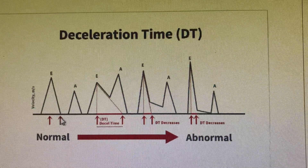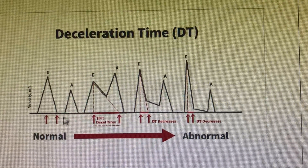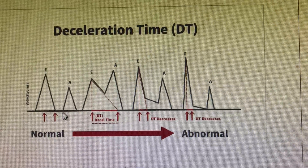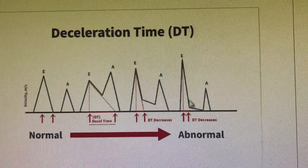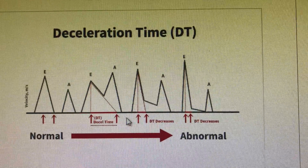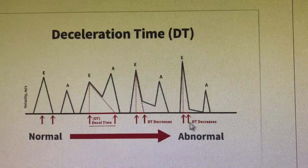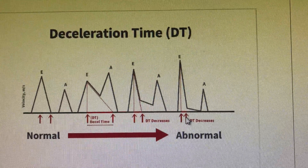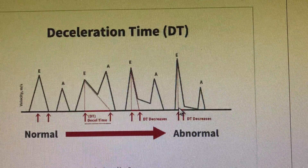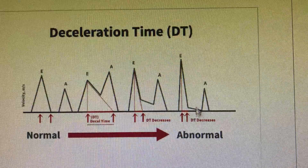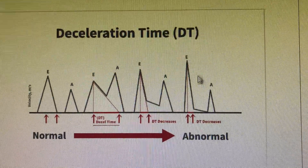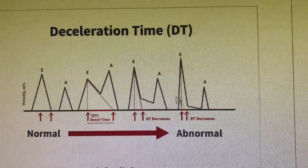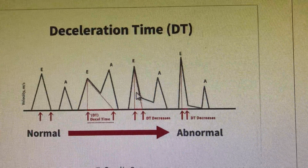That is the deceleration time. As the abnormality of the diastolic filling pressure increases, or as diastolic dysfunction worsens, the deceleration time goes on decreasing. In the restrictive myopathy pattern, the deceleration time will be almost less than 30 to 50 milliseconds. This is how it helps differentiate, because the E and A waves will look similar in the graded stages.